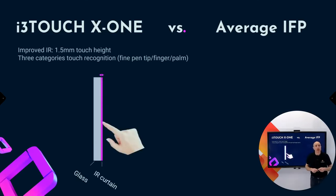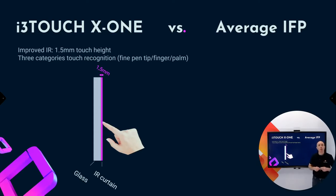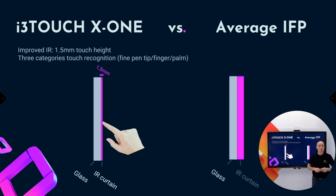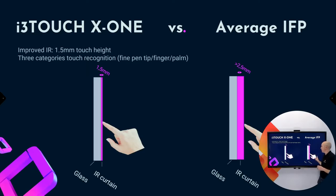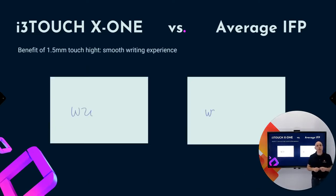Another big advantage or improvement is the touch height. We were able to improve the infrared touch technology with a touch height up to 1.5 mm. If we look at the average panel, we see that the touch height goes from 2.5 mm up to even 4 mm. On the next slide we will see what difference that makes — and that's of course in the writing experience. The lower the touch height, the better the writing experience, the nicer you can write on an IFP.